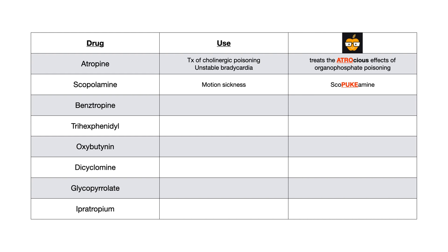Scopolamine is used to treat motion sickness and some vertigo symptoms. If you've ever visited a coastal town, many stores sell scopolamine patches for sea sickness. My mnemonic: 'scopukaamine' — scopolamine treats the motion sickness that would make you puke.